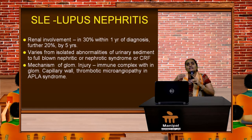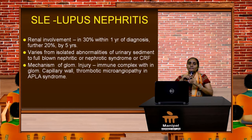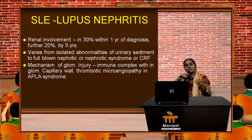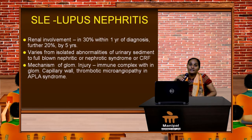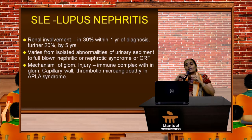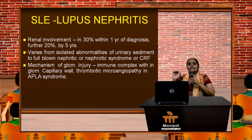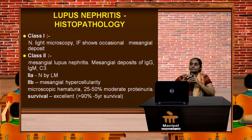You should remember the urinary sediment in SLE is called a telescopic cast — you get all kinds of casts: RBC, WBC, hyaline, protein, etc. The patient may also present with full-blown nephrotic syndrome or chronic kidney disease. The mechanism of glomerular injury is mainly immune complex deposition within the glomerular capillary wall, with thrombotic microangiopathy, especially in antiphospholipid syndrome.